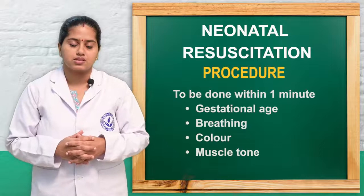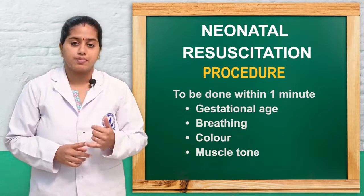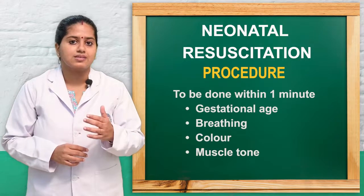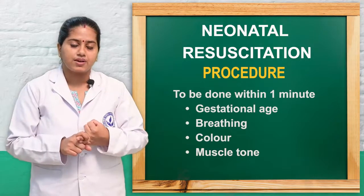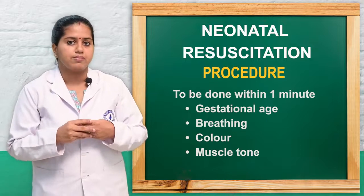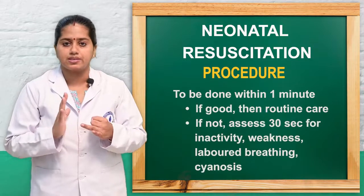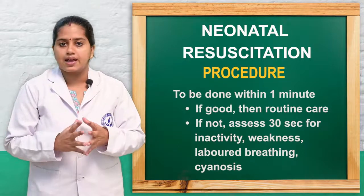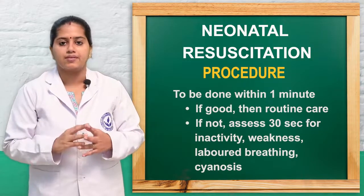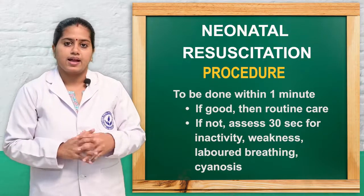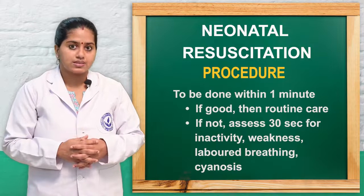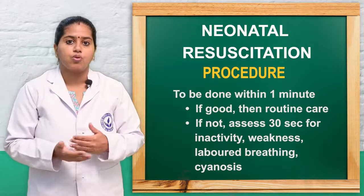For the procedure, the initial step takes place within 1 minute immediately after birth. We have to see the gestational age of the baby, whether the baby is breathing well, what the colour of the baby is, and what the muscle tone is. If the baby is active, crying is good, muscle tone is good, and gestational age is term, then we can give the baby to the mother, dry and stimulate, clean the baby, open the airway, and provide routine care. We then assess for 30 seconds. If the baby has laboured breathing, gasping, or cyanosis, we go to the next procedure.